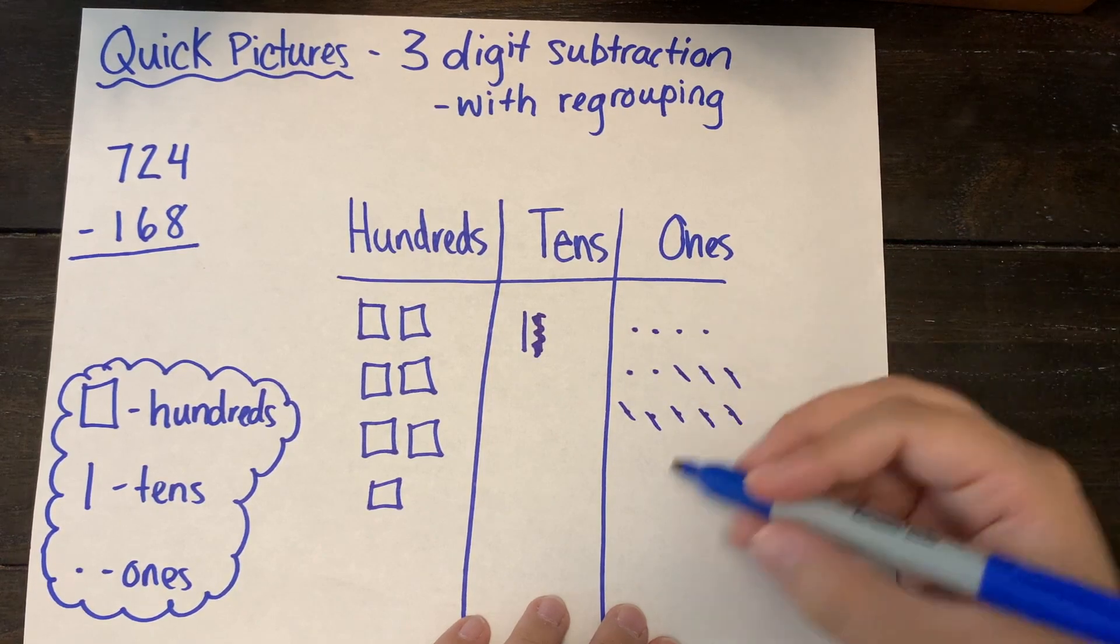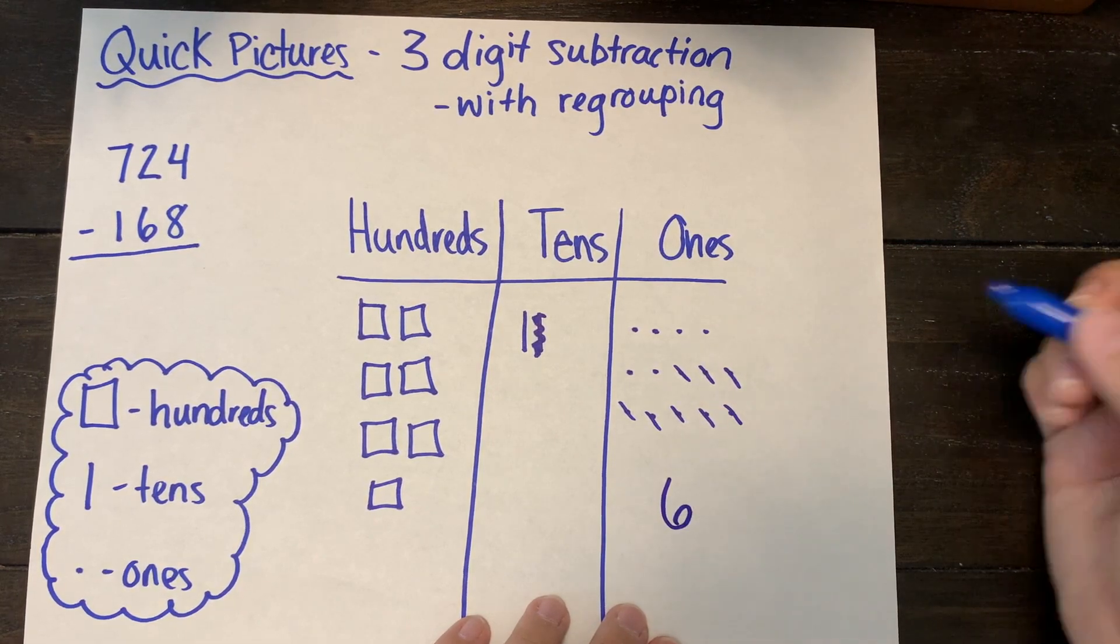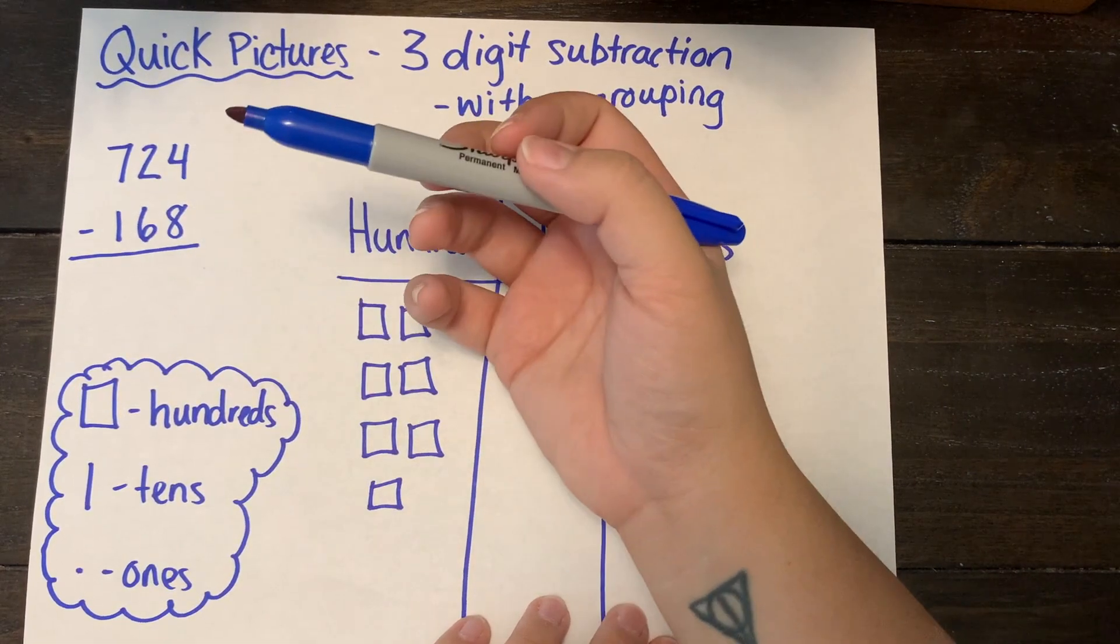So after I take eight ones away I am left with six ones. Now my tens column I have the same problem.